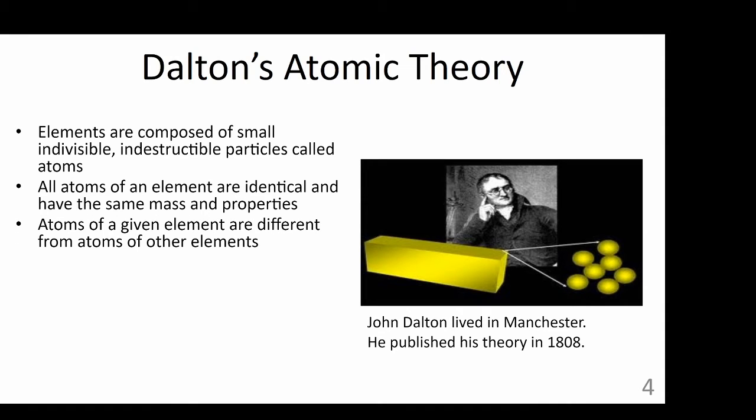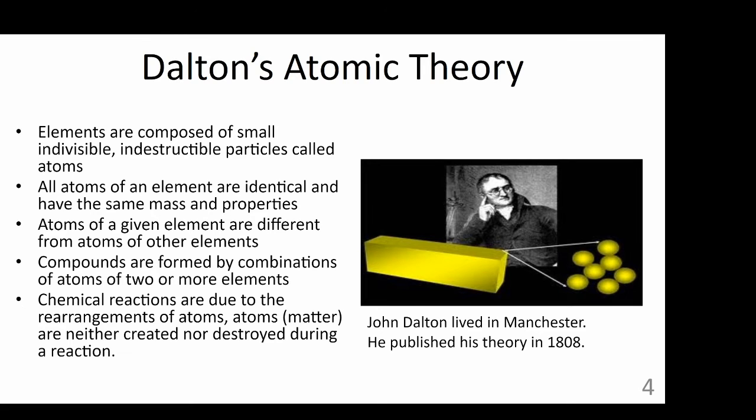Atoms of a given element are different from atoms of other elements. So each element has atoms that are different than other elements, but we don't know why elements are different from one another under Dalton's theories. Compounds are formed by combinations of atoms of two or more elements. This is a different picture of compound formation from the Greeks. And finally, chemical reactions are due to the rearrangement of atoms. Atoms are neither created nor destroyed during a chemical reaction. This is essentially stating that matter is conserved in a chemical reaction.